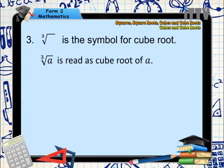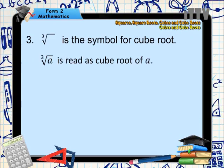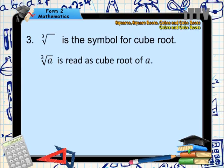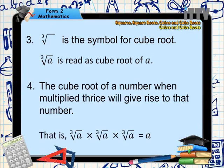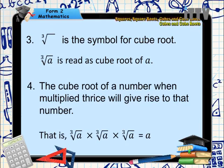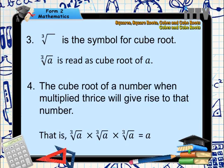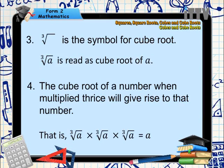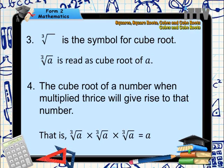Dear students, this is the symbol for cube root. It can be read as cube root of a. The cube root of a number when multiplied thrice will give rise to that same number. For example, the cube root of a multiplied by the cube root of a multiplied by the cube root of a will eventually give you a.